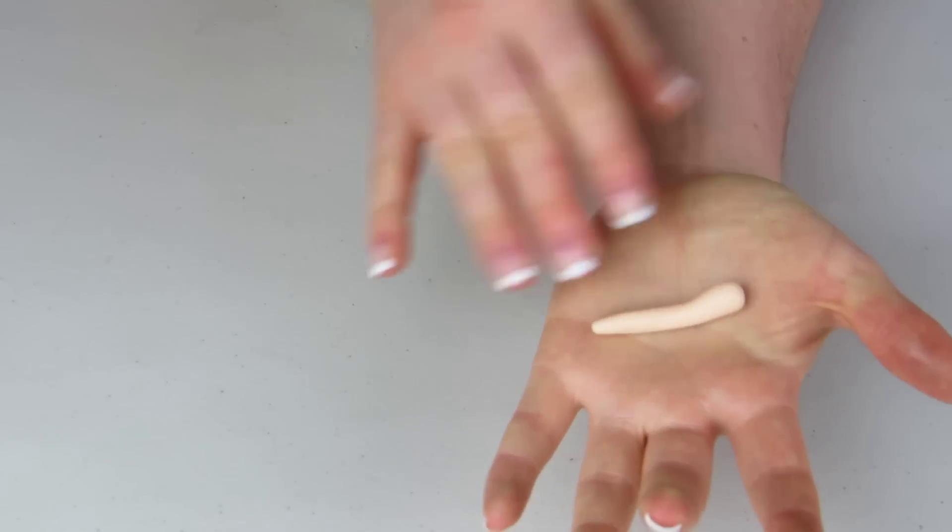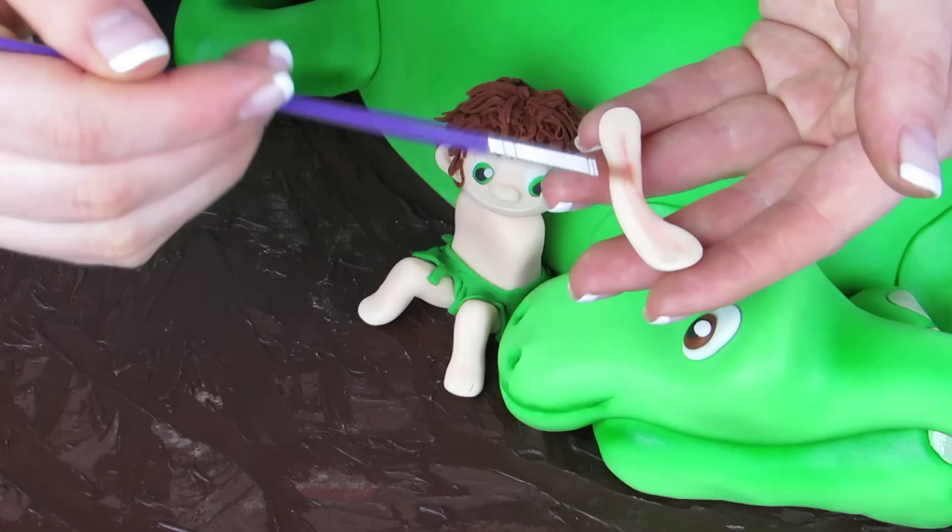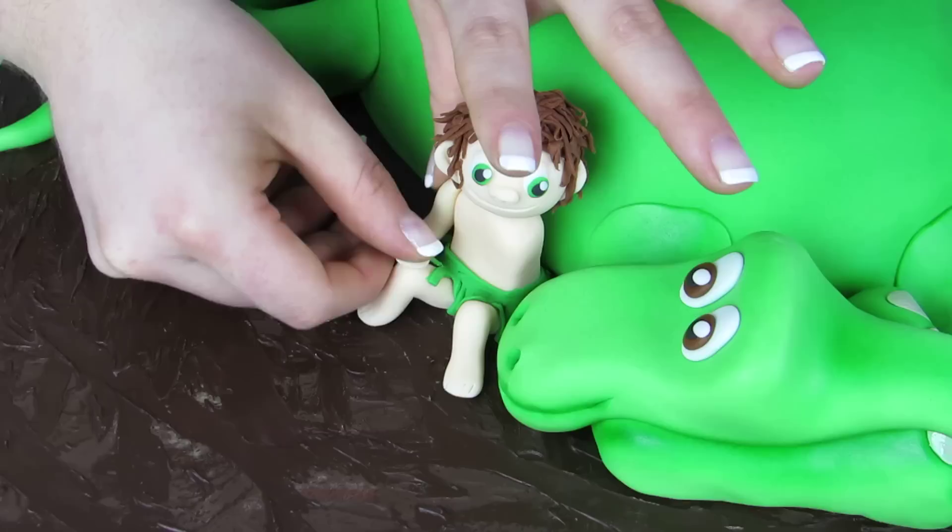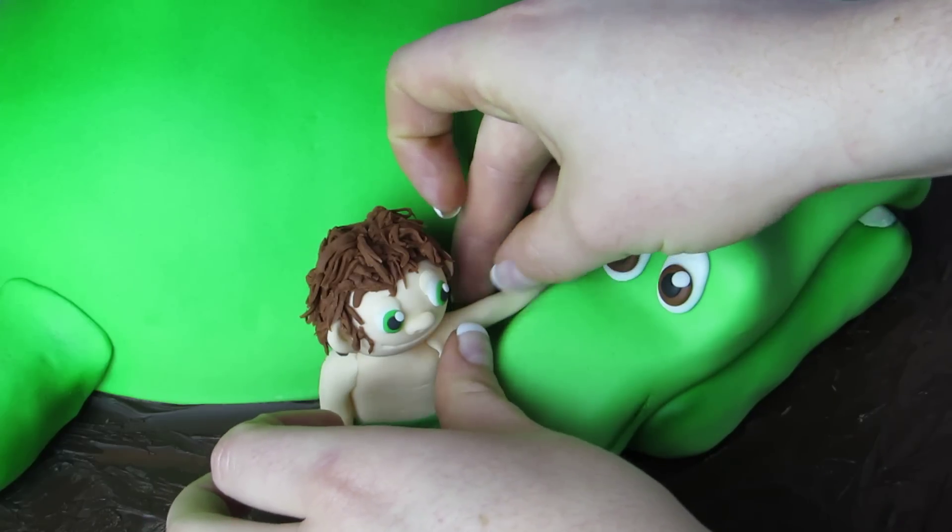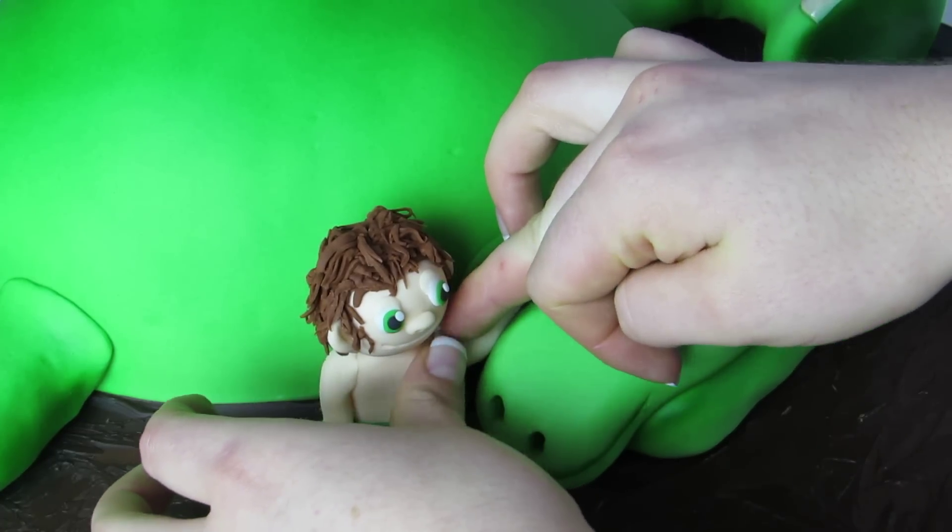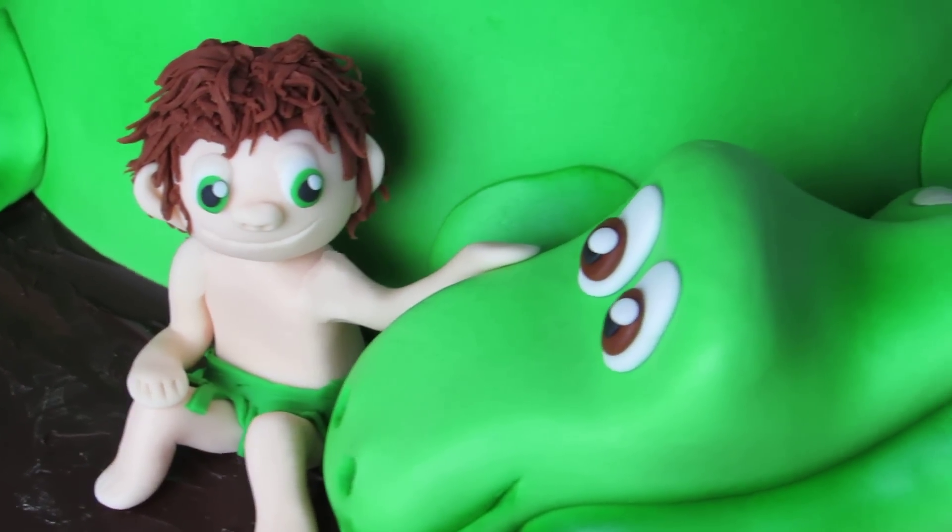And now I'm gonna make his arms and that's so I can kind of wrap him around the dinosaur. So kind of the same way we make his legs we're gonna smooth out both sides and then kind of glue it down using some water. Wrapping one arm around his knee and the other around the good dinosaur. Of course you can make the arms the same time as you make the rest of the figurine but I wanted mine soft so that way I could kind of wrap it around him.